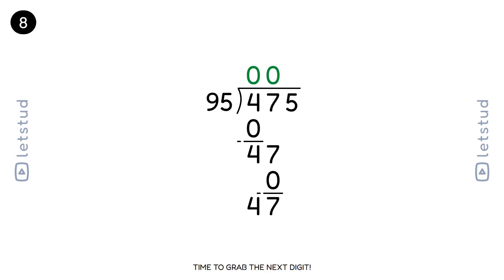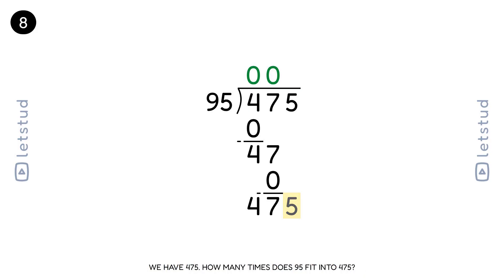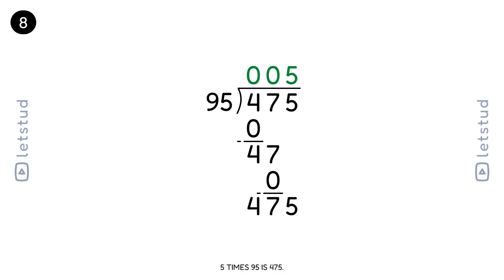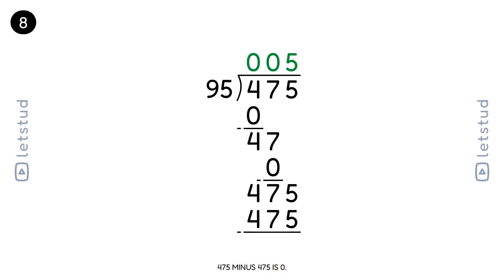Time to grab the next digit. We have a remainder of 47 and bring down the 5 to make 475. 95 fits into 475 five times. 5 times 95 is 475. 475 minus 475 is 0.